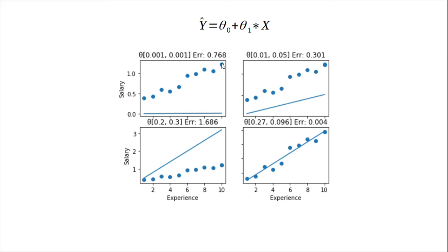Now we compute the distances from each point to this line, and compute the average distance — this is called the error. We try to change theta one and theta zero until the line is close to the data. If we increase them too much, the line moves away from the data. The best fit has an average distance of about 0.004.